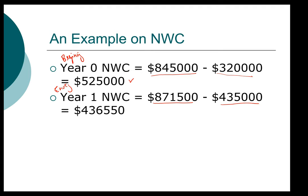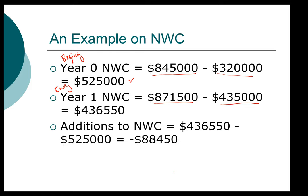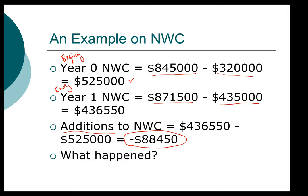Now that we have the beginning and ending net working capital, we can compute the additions to net working capital. We saw that in this firm our ending net working capital is less than our beginning net working capital, which is a little unusual. That means our addition — based on our formula — will turn out to be a negative number. What that means is we didn't add to our net working capital; instead, we reduced it.